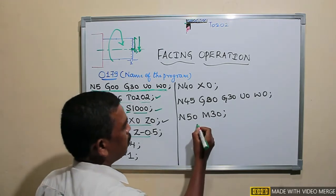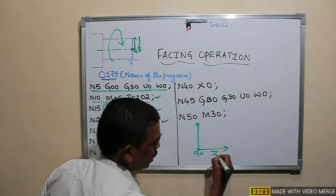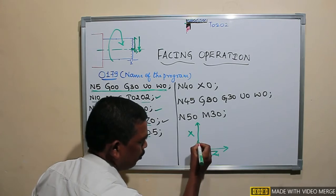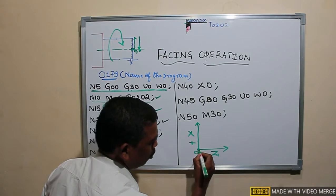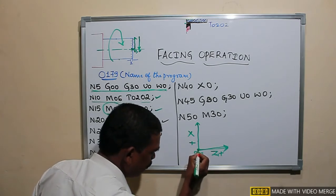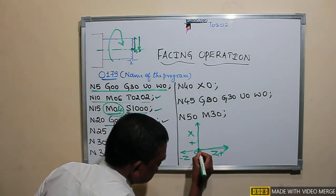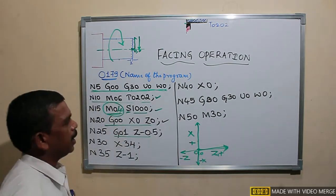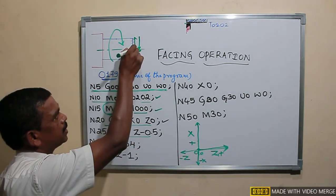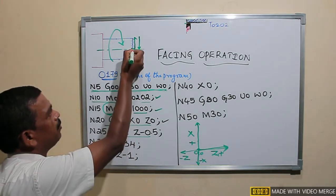After rotating the work piece, I will position the tool from its home position to the job's zero-zero point. If zero-zero is here, this is the Z axis and this is the X axis. If you want to move the tool in the positive X direction, give plus X. To move right give Z plus, to move left give Z minus, and to move in the negative X direction program minus X.